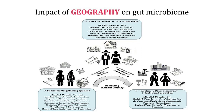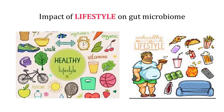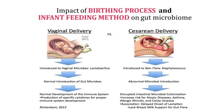Unhealthy lifestyle practices like alcohol, smoking, junk foods and lack of exercise can significantly impact the gut microbiota and increase the risk of developing serious health issues. Mode of birth also has major impact on gut microbes. During vaginal delivery, the baby will be exposed to Lactobacillus, which is considered normal, and the production of certain specific cytokines helps in proper development of the immune system. Whereas during C-section, the baby is first exposed to skin microbes, which is mainly Staphylococcus, which is considered abnormal.